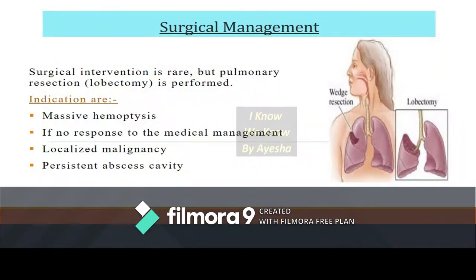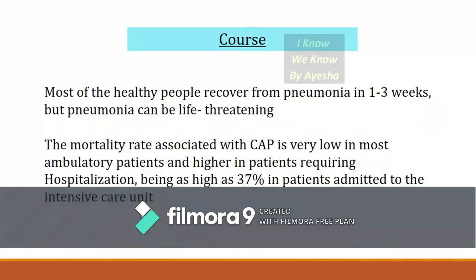Surgical management is very rare; only lobectomy (pulmonary resection) may be performed. Indications include massive hemoptysis, no response to medical treatment, localized malignancies, or a persistent abscess cavity in the lung. Most healthy people recover from pneumonia in 1 to 3 weeks, but it can be life-threatening. The mortality rate for community-acquired pneumonia is low in ambulatory patients but can be as high as 37% in patients admitted to the ICU.